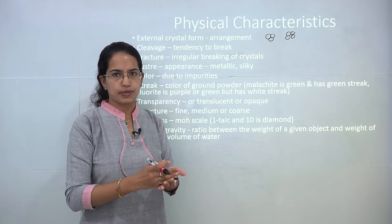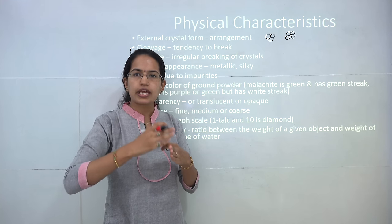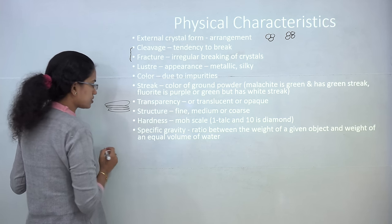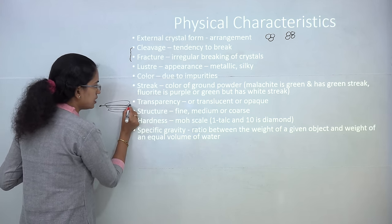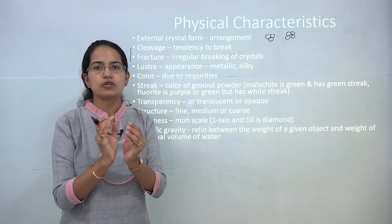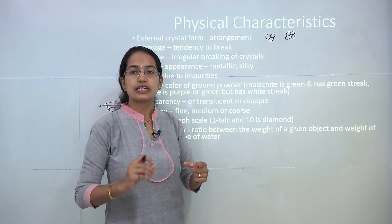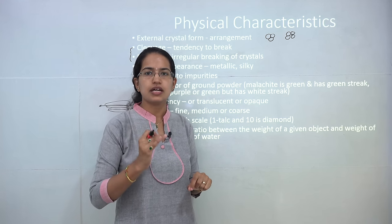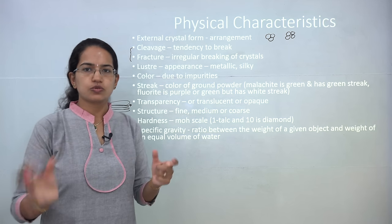The next characteristic is cleavage — the tendency to break. Cleavage and fracture are two different things. Cleavage is the tendency to break at a certain point, such as along the layers in which igneous rock is formed. Fracture, however, is the irregular breaking of the crystal — it can break in any form from anywhere. The next is luster: the appearance of the mineral, whether it is metallic, silky, or smooth. Then you have color, which occurs mainly due to impurities present in the mineral, giving it a unique color.